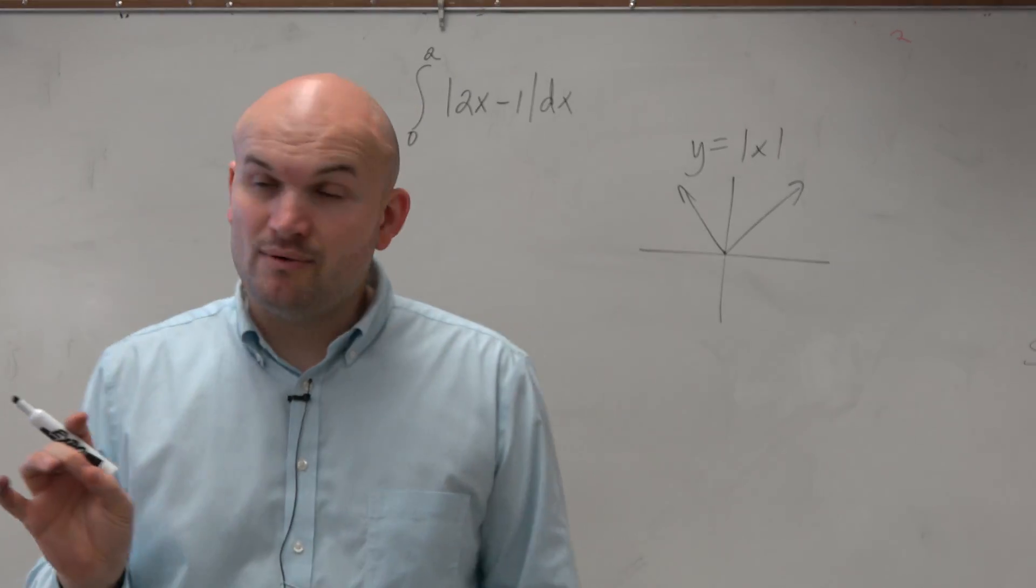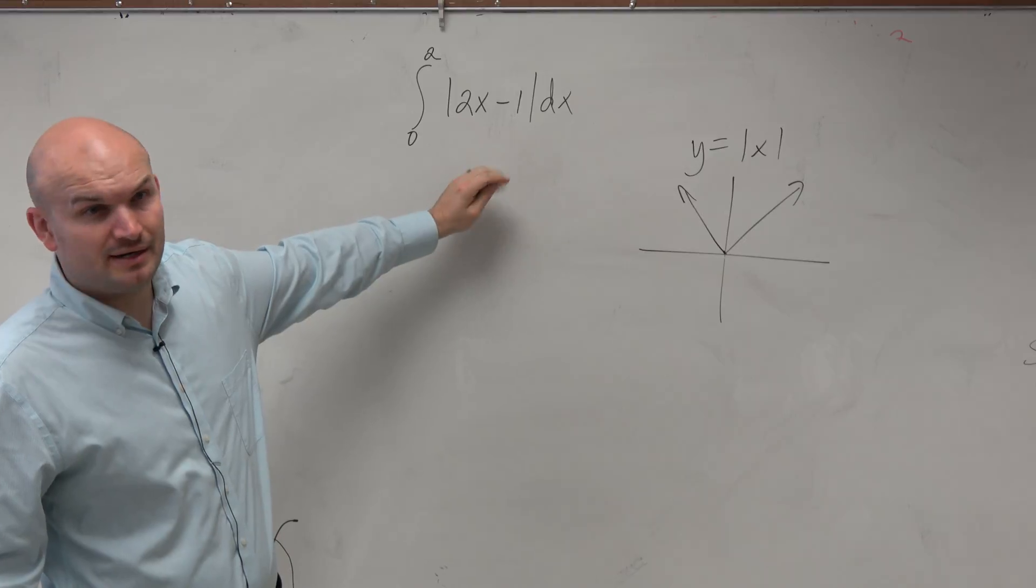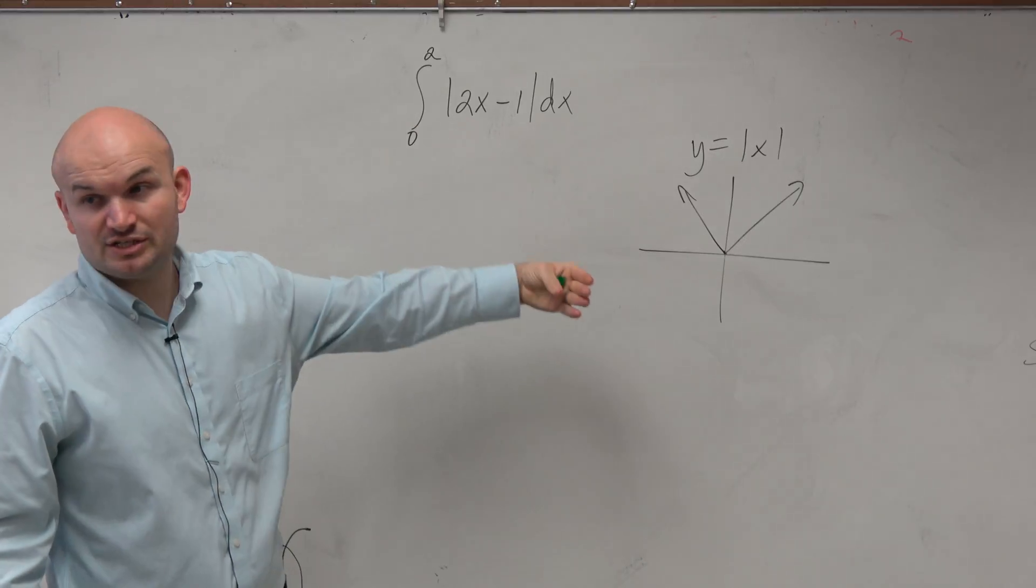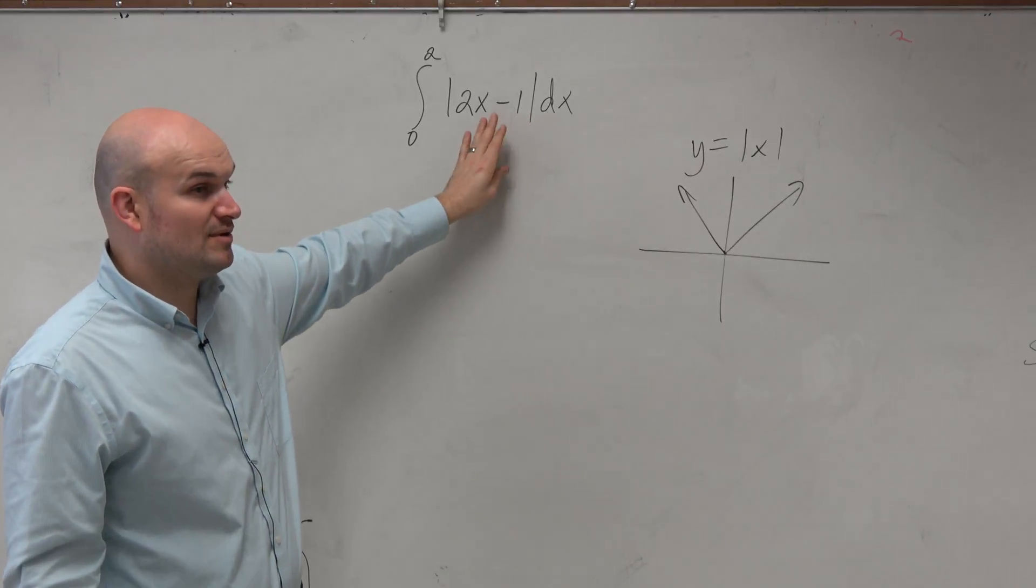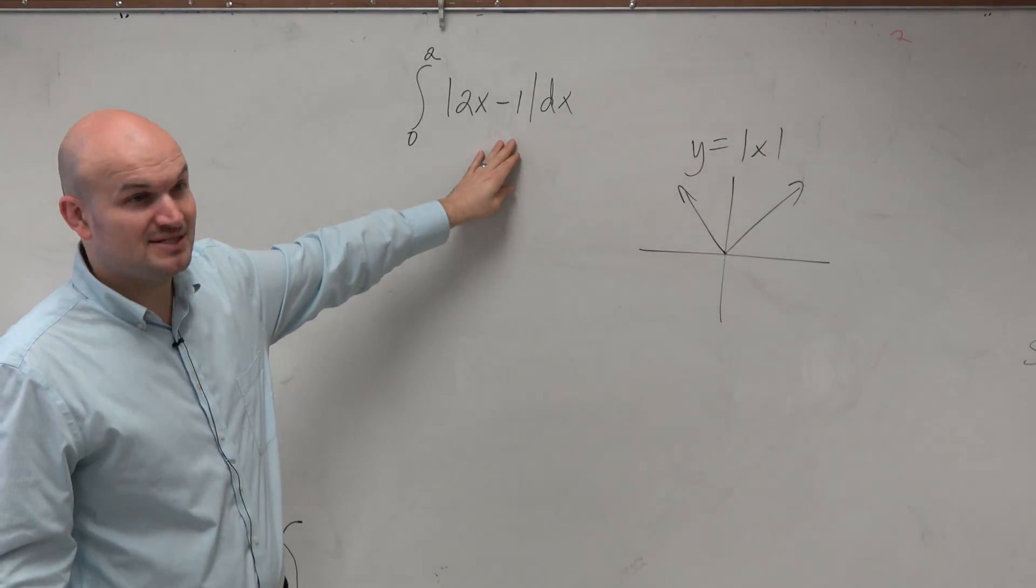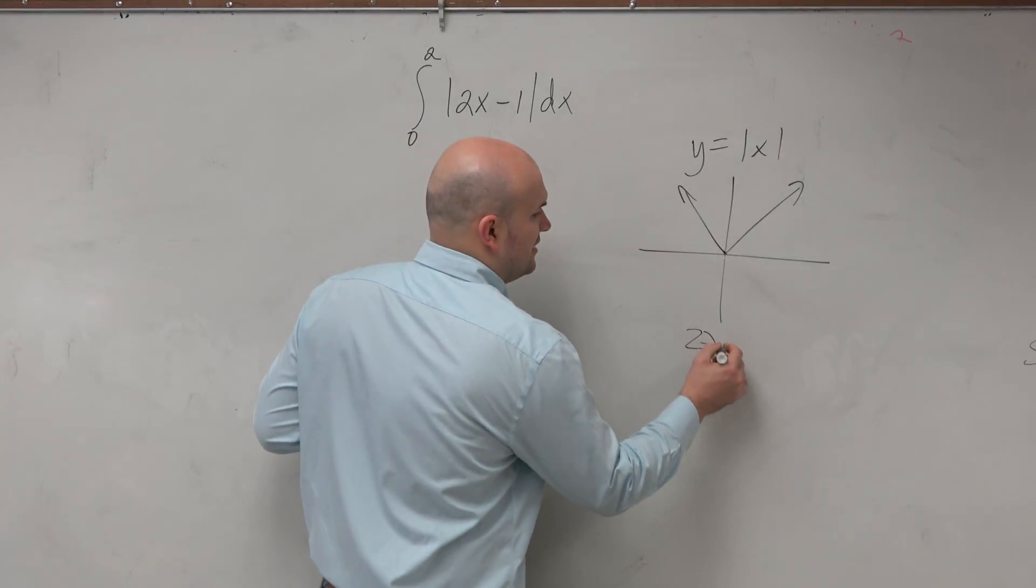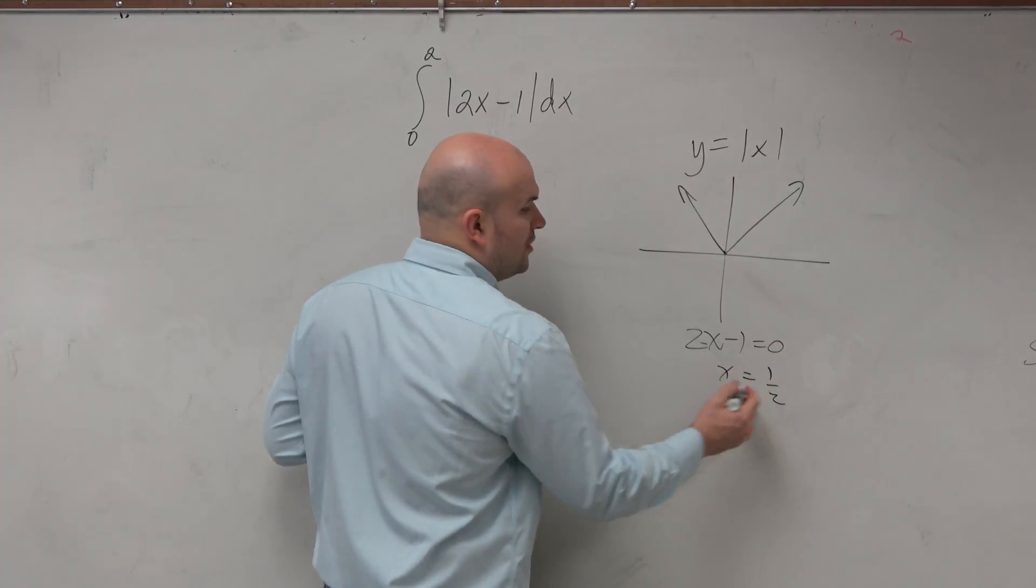So now, if we're looking at 2x minus 1, there's a couple things that are happening here. First of all, this graph is being shifted, not one unit to the right - it's being shifted one unit to the right, but it's not 1. What you need to do is set inside your function, set it equal to 0, and you get x is equal to 1 half.